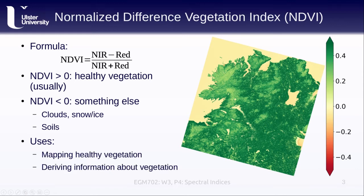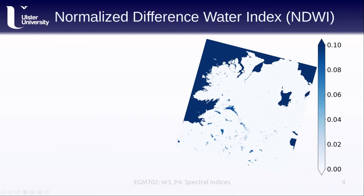We can use the NDVI for many different purposes — for example, to map healthy vegetation. Because the NDVI value is often correlated with the vegetation present within a pixel, such as the amount of leaf area, we can use it to derive further information about the vegetation we're trying to study.